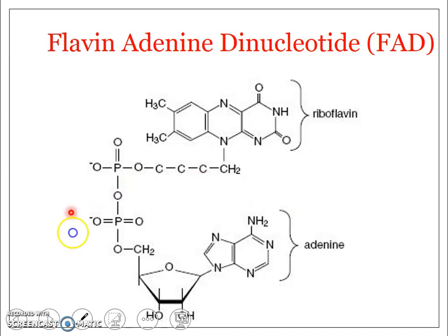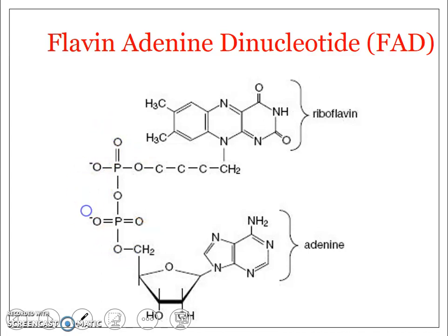The other part is adenosine monophosphate, which is formed of adenine — the nitrogenous base — the ribose sugar, and a single phosphate molecule. These two monophosphates are connected via a phosphoanhydride bond. This is how the flavin adenine dinucleotide is formed.